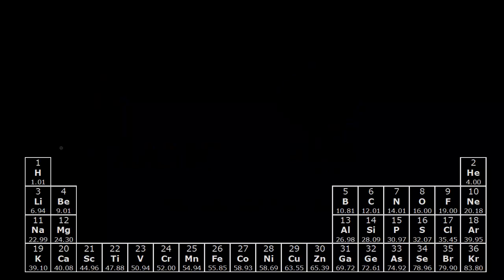Let's do electron configurations for the second period. We find the second period on the periodic table and go across. The first element we see is lithium, with three electrons. The first two electrons for lithium are going to go into the first shell.